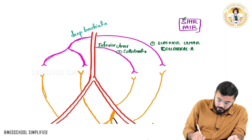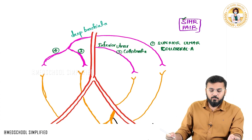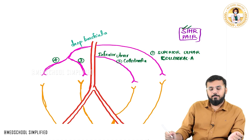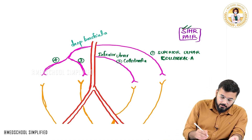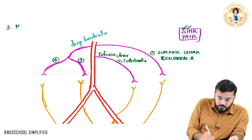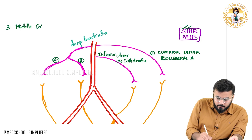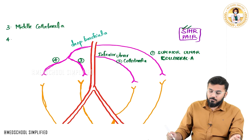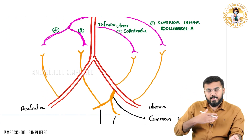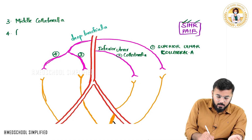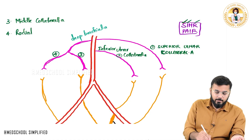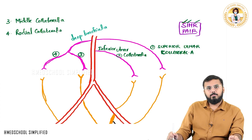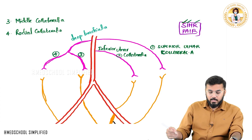Looking at the third and fourth branches: M stands for middle collateral artery. R stands for the fourth branch, which is on the radial side, giving us the radial collateral artery. So SIMR gives us four collateral branches: superior ulnar collateral, inferior ulnar collateral, middle collateral, and radial collateral artery.